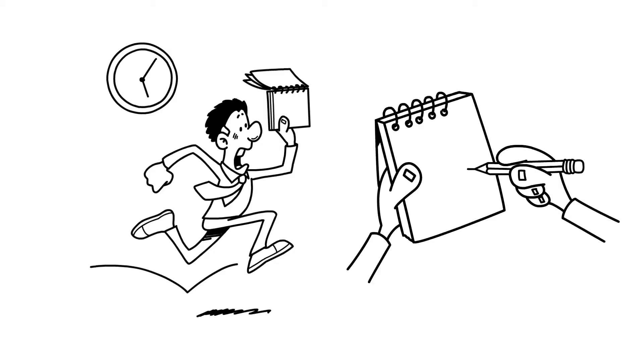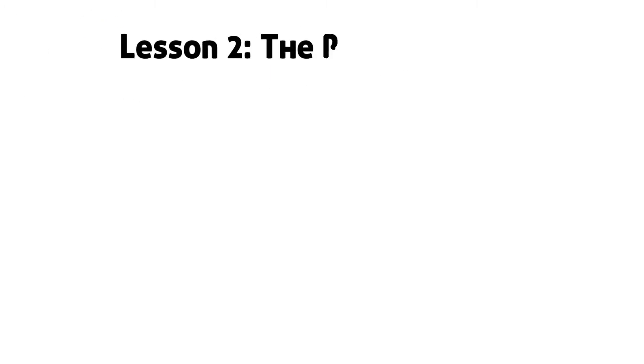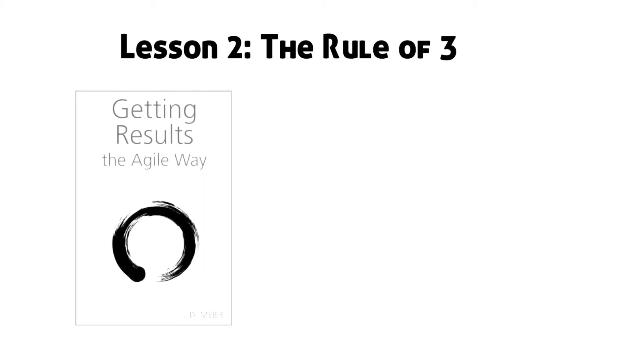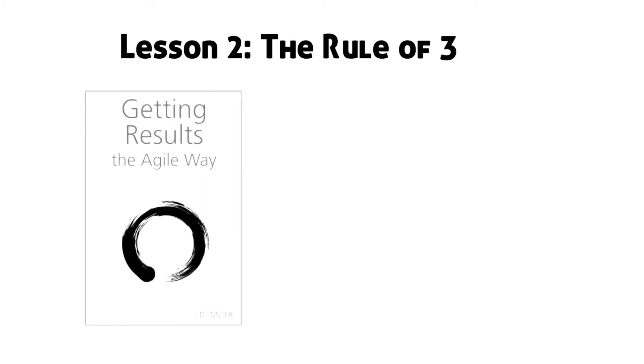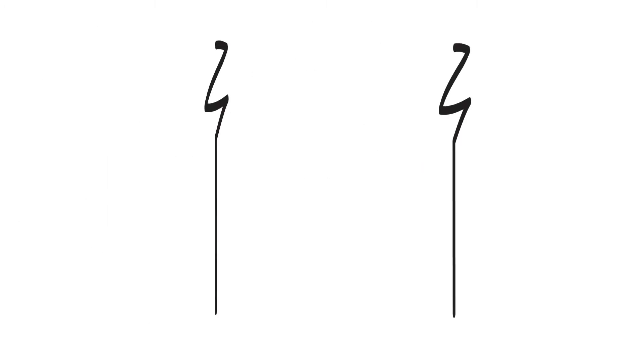Let's look at one of the tools he found for time management in Lesson 2. Lesson 2: The Rule of 3. In a book by a Microsoft executive called Getting Results The Agile Way, Chris found a way to chunk his goals into more achievable milestones. It's called The Rule of 3 and prompts you to think in three time frames.